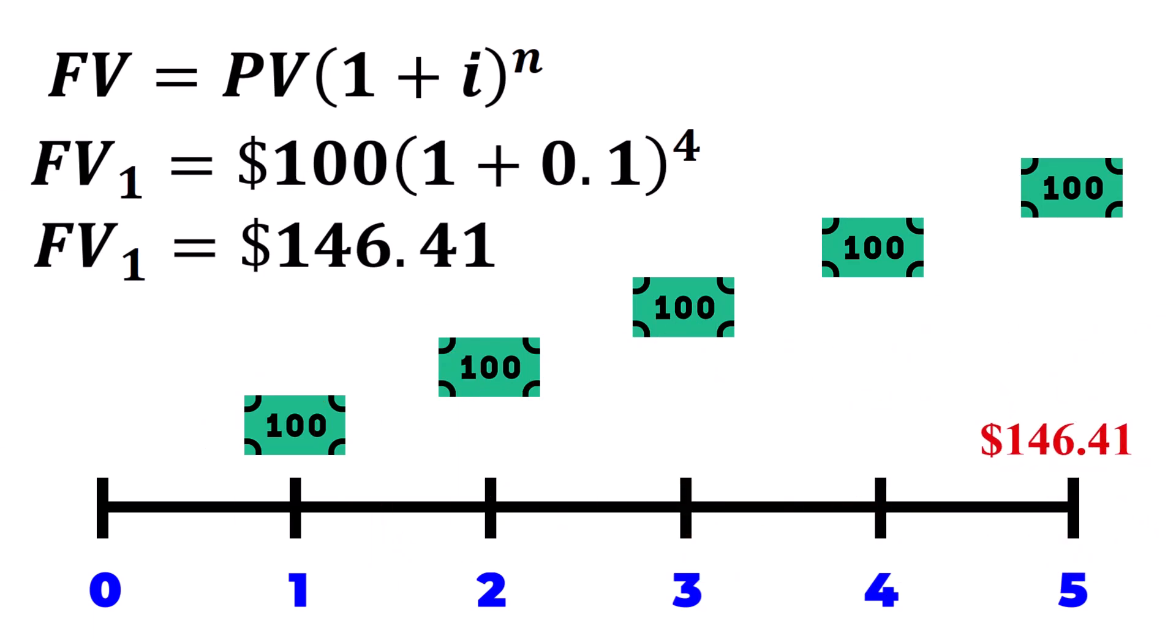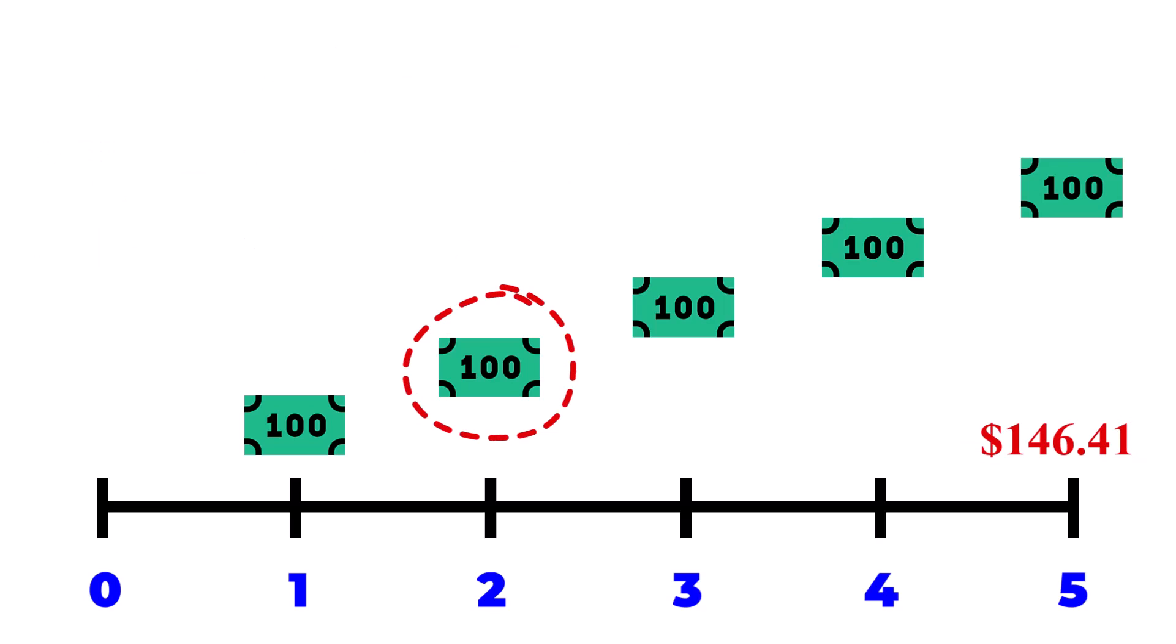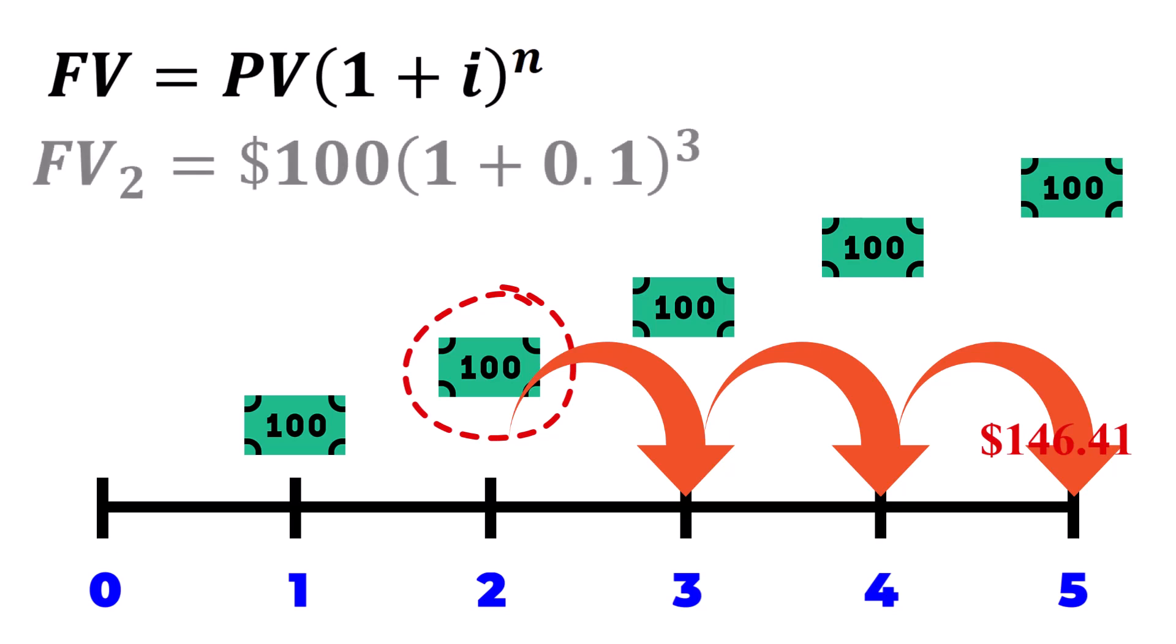For the second $100 installment, which is paid at the end of year 2, only three compounding periods will occur by the end of the annuity. Its future value by the end of year 5 is calculated using the same formula as before, except with a change in the exponent from 4 to 3. It matures to $133.10.